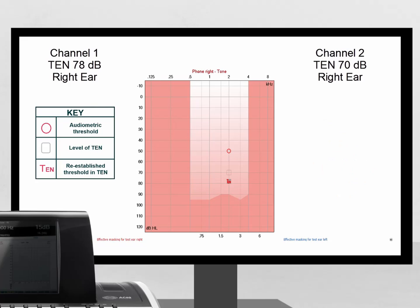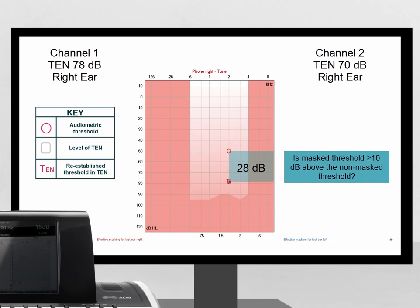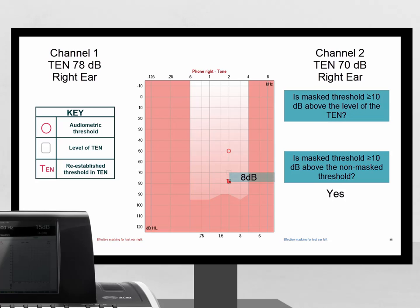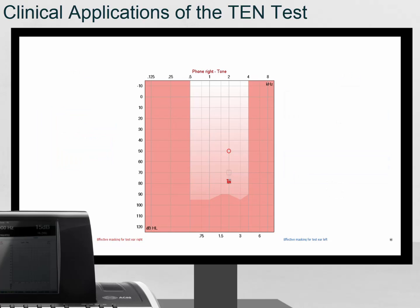However, when the clinician increased the dial setting of the masking noise to the correct level of 70 dB and re-established threshold, we can see that the masked threshold is now 28 dB larger than the non-masked threshold. This establishes one of the criteria. But it is still only 8 dB larger than the TEN level. As this is smaller than 10 dB, it does not reach both criteria and therefore a dead region is not present.